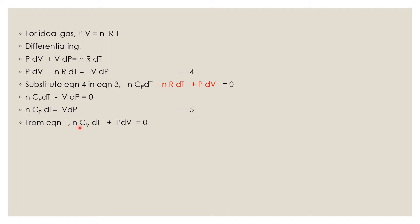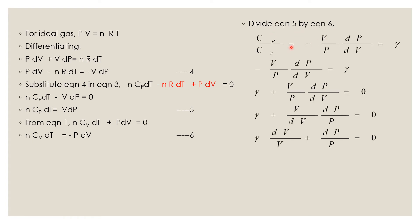From equation 1, we get n·Cv·dT is equal to minus p·dV — equation 6. Dividing equation 5 by equation 6, we get Cp over Cv is equal to minus V·dp over p·dV. The ratio of these specific heats is equal to gamma. Taking minus V·dp over p·dV to the other side gives gamma plus V·dp over p·dV is equal to zero.